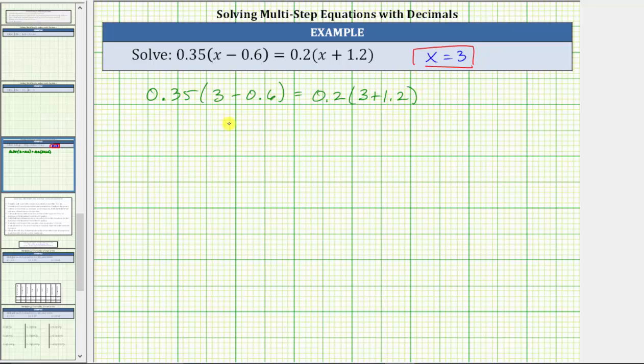And now we simplify both sides of the equation following the order of operations. We simplify inside the parentheses first. 3 minus 0.6 is 2.4. On the left we have 0.35 times 2.4. On the right we have 0.2 times 3 plus 1.2 is 4.2.